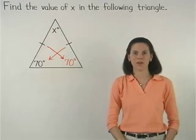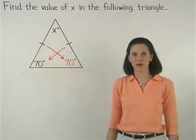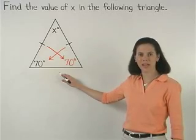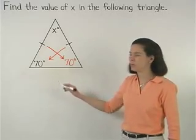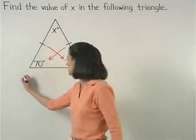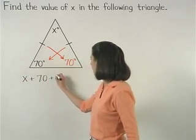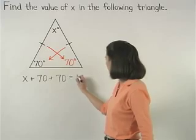Now to find the value of x, remember that the sum of the measures of the angles of a triangle is 180 degrees. So we can set up the equation x plus 70 plus 70 equals 180.